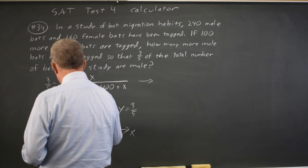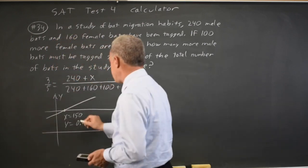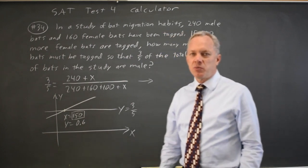X equals 150. Y equals 0.6, which is three-fifths. We knew that. So we need 150 more male bats.